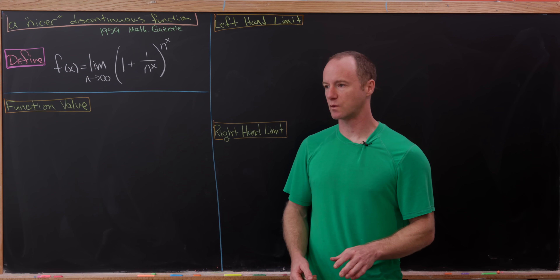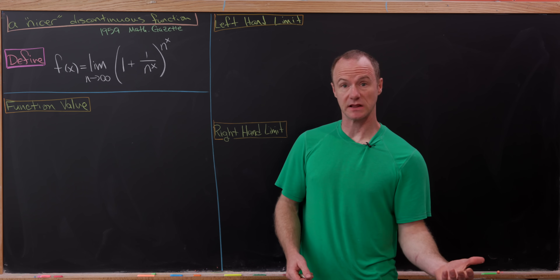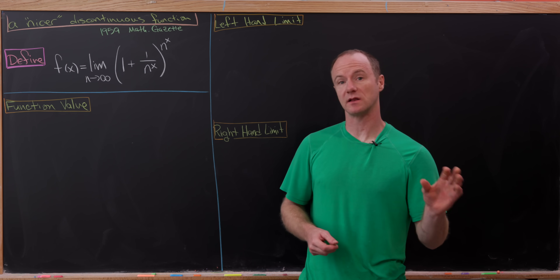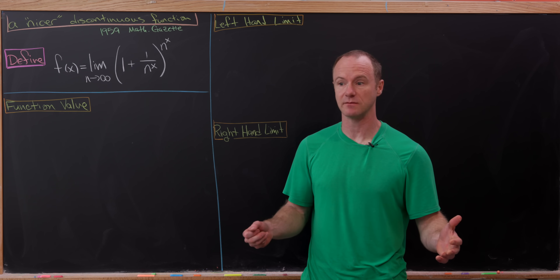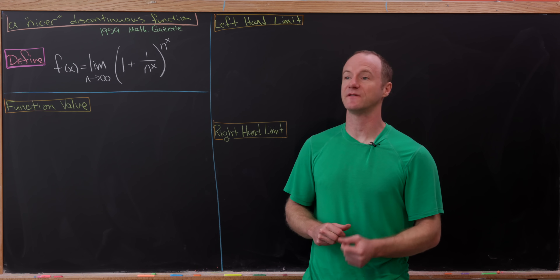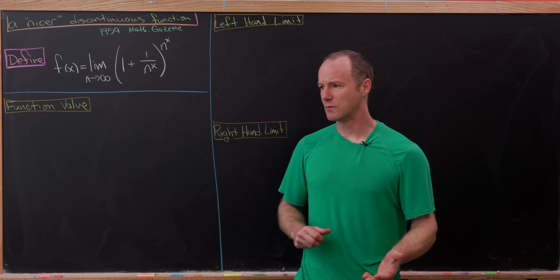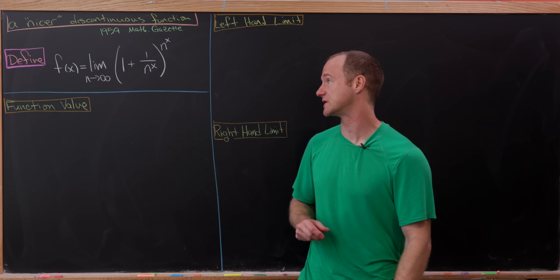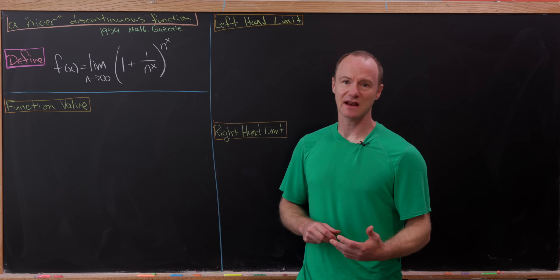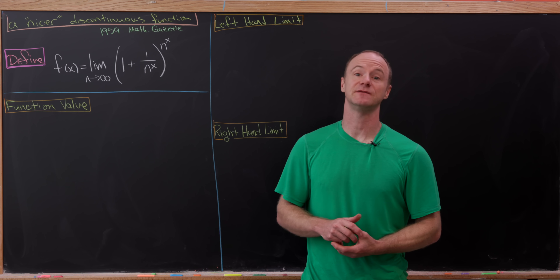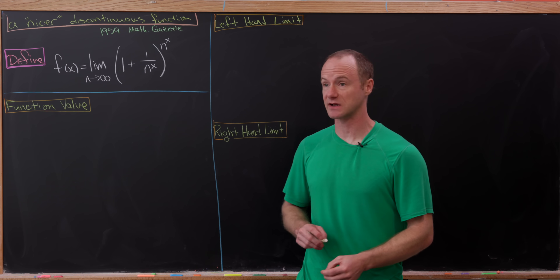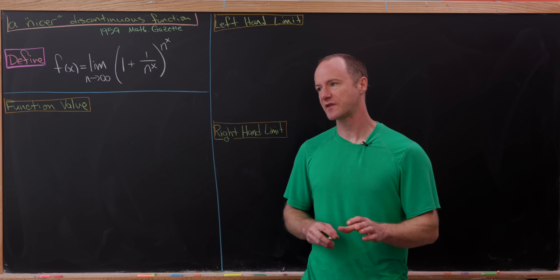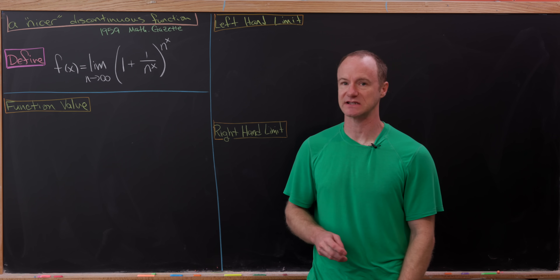So often when you learn about limits in a Calculus 1 class, you learn about limits from the left, limits from the right, and you look at some examples where left-hand limits and right-hand limits are not the same, and neither of them are equal to the function value. Most of these examples are piecewise defined functions or perhaps simply graphs of functions. Today I'd like to show you an example found in a 1959 issue of the Mathematical Gazette of a function that has this kind of strange behavior without being explicitly defined as a piecewise function.